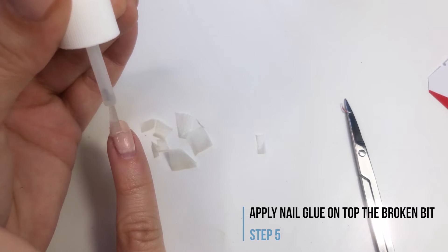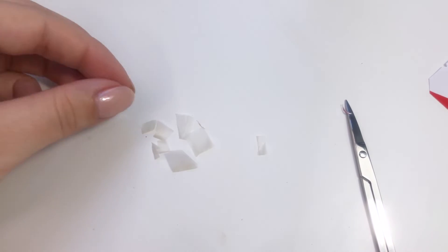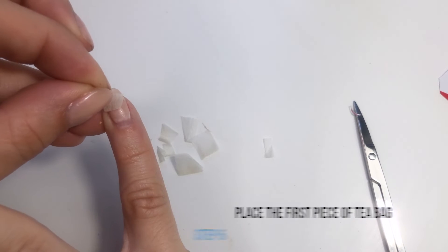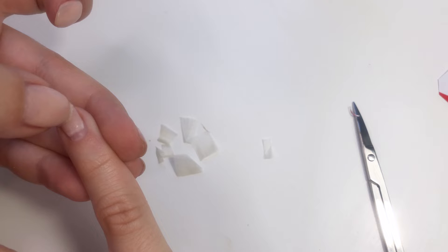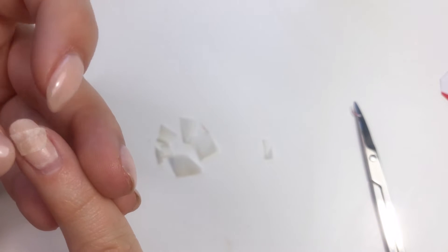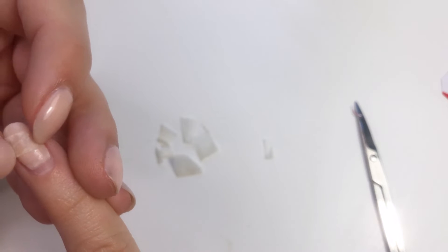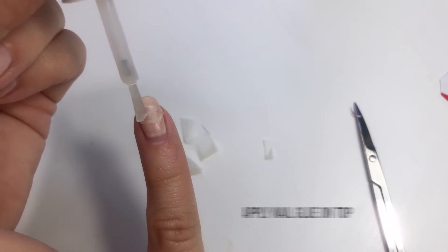You're gonna apply the glue on top of the broken bit and place your first tea bag on top. Make sure that the first piece you put on is covering the whole crack, then apply glue on top of that.